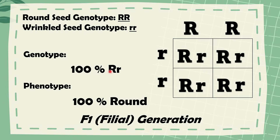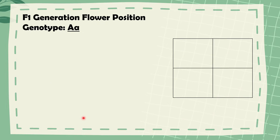The offspring of the parental cross of pure breeding plants are called the first filial or F1 generation. When the plants from the F1 generation are crossed with each other or self-pollinated, the offspring will be called the F2 or second filial generation. Let's have an example of that. We have the F1 generation flower position genotype: dominant A and recessive A — meaning this is the actual flower position. Now let us determine the F2 generation, or the second filial generation.